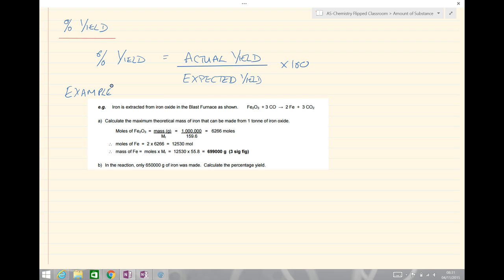Often the first thing we do in percentage yield calculations is to do our reacting mass calculation. So here we've got to calculate the maximum theoretical mass of iron that can be made from one ton of iron oxide. And we go through that equation, and this calculation here is calculating the expected yield. That is how much we expect to make of the iron oxide. So that value is expected is 699,000 grams.